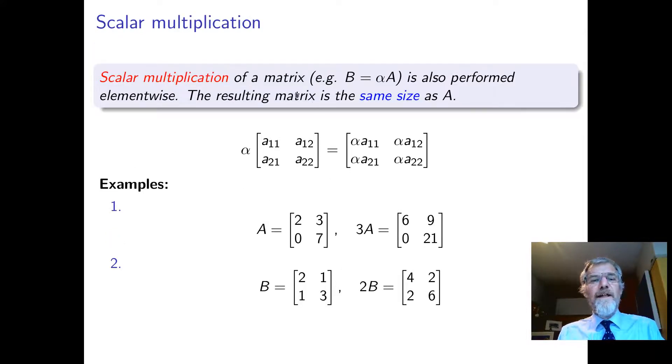We can multiply a whole matrix by a scalar, in other words a number, alpha. We just do that element-wise. So alpha times the matrix A, we just multiply all the elements by the scalar number alpha. So 3A, where A is this matrix, we just multiply all the elements by three.